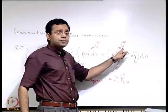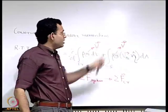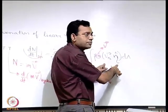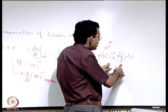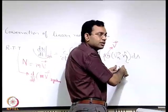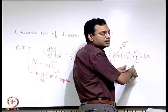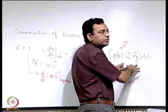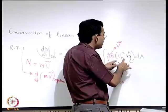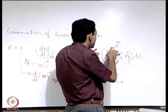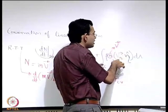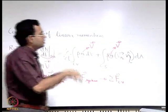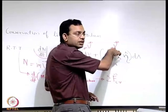Here, this v is the absolute velocity. Even in this particular term, we are not disturbing it because this term gives rise to a net flow of mass across the control surface, and that depends only on the relative velocity, not the absolute velocity. So here it will be absolute velocity, here it will be relative velocity. When it is a moving reference frame, this will also change to relative velocity — that we will see.